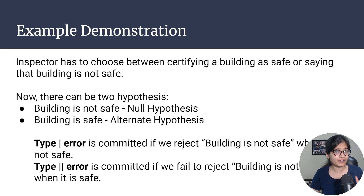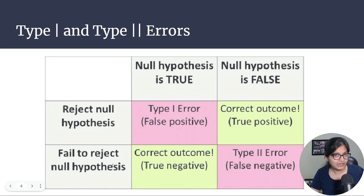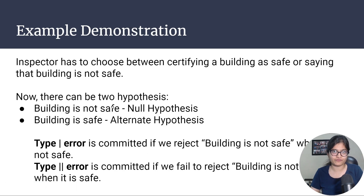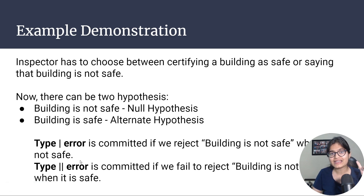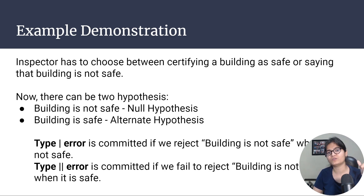Similarly, for Type 2 error in this situation: null hypothesis is false, meaning the building is actually safe. Type 2 error is committed if we fail to reject the null hypothesis — 'building is not safe' — when actually it is safe. Now compare: is Alpha more serious or Beta? I think everyone will agree that Alpha is something very important to consider here, because we can't take the risk of the lives of the people staying in the building. That's why we always focus on this value of Alpha, the level of significance. To focus on that, there is a concept of p-value, which I will talk about in the next upcoming video.